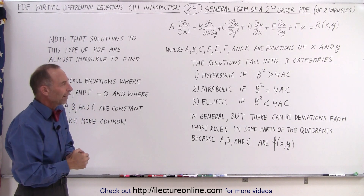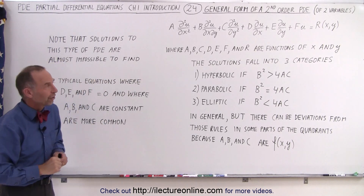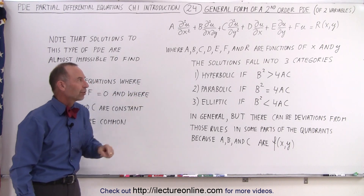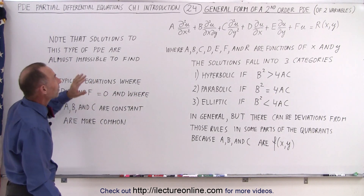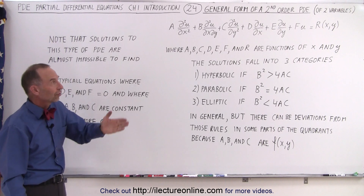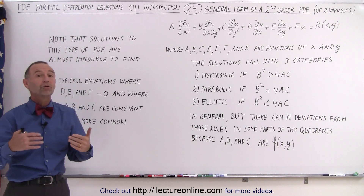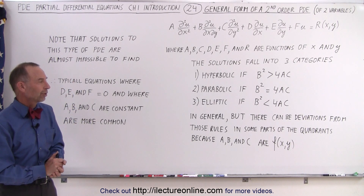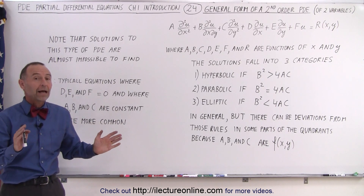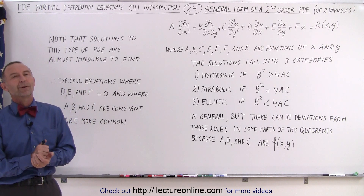We're going to show you some examples of how to do that. We wanted to introduce you to the general form of the second-order partial differential equation, the typical types of solutions depending upon the values of A, B, and C, and that typically D, E, and F tend to be zero, while A, B, and C tend to be constants. R is either zero or a function of X and Y, and we'll show you how to solve both of those types of second-order partial differential equations in upcoming videos.